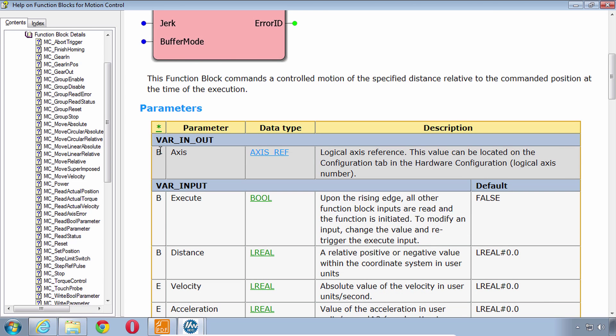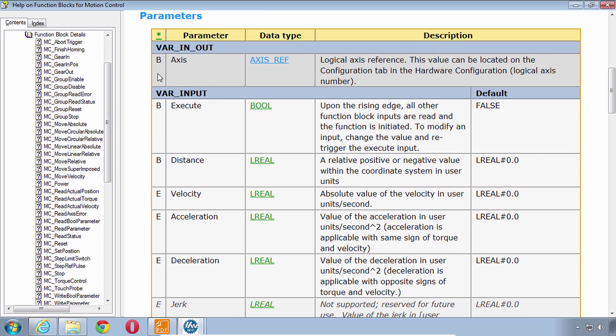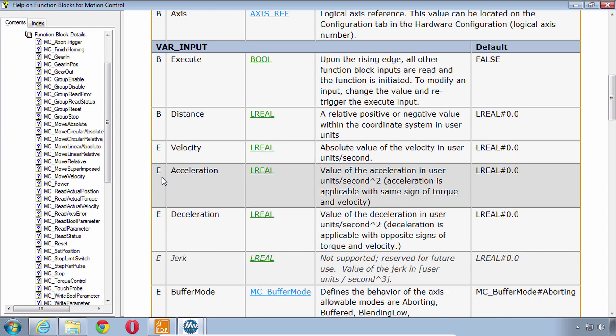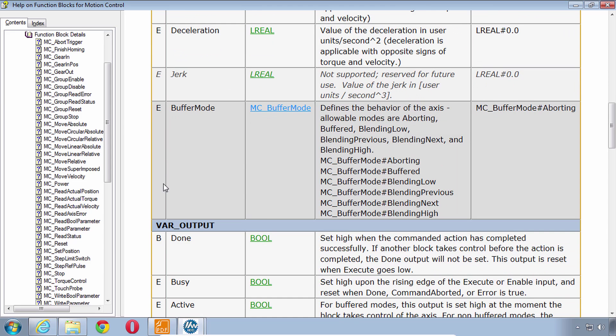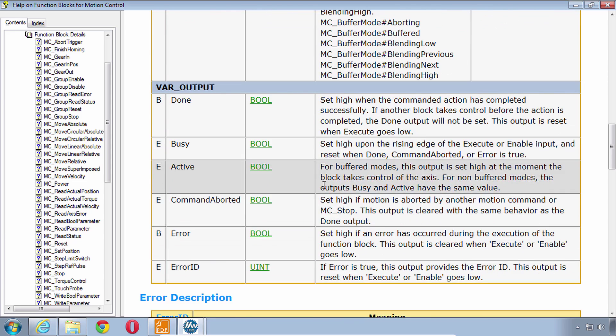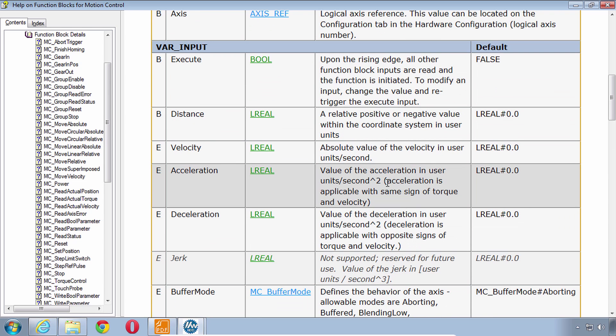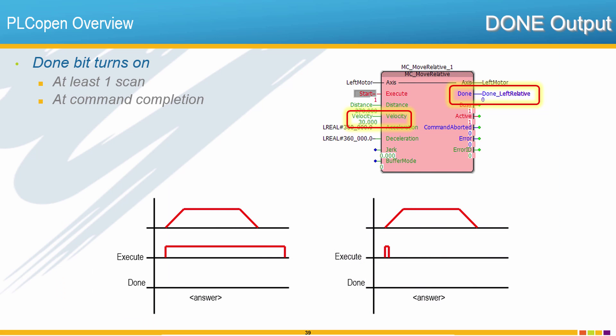A frequently asked question is what is this first column. It does say with this tooltip that B is Basic, E is Extended and V is Vendor specified. So B means you've got to have it to call this block PLCopen, but there are some extended meaning optional inputs that you can use, inputs and outputs that you can use, and then the vendor has the ability to add their own. And now the final general rule summary I'd like to discuss is the done output.